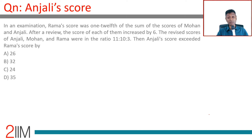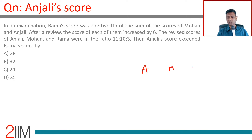In an examination, Rama's score was 112 — the sum of the scores of Mohan and Anjali. After a review, the score of each of them increased by 6. The revised scores of Anjali, Mohan, and Rama were in the ratio 11:10:3.